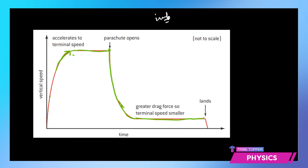This second terminal speed is much smaller, and that is the purpose of the parachute — to slow down the skydiver so that when he lands he has a safe landing. The terminal speed is a very low constant speed, and when the person lands it leads to a safe landing. I hope the topic of fluid resistance and terminal speed is clear. In our next video session you are going to learn about work.